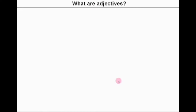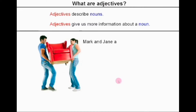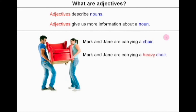First of all, let me give you some information about adjectives. So what are adjectives? Well, adjectives describe nouns. Therefore, adjectives give us more information about a noun. For example, in this photo, Mark and Jane are carrying a chair. So, the chair is a noun. And if you want to give more information about the noun, we can say Mark and Jane are carrying a heavy chair. So, heavy is an adjective — it describes the noun chair.